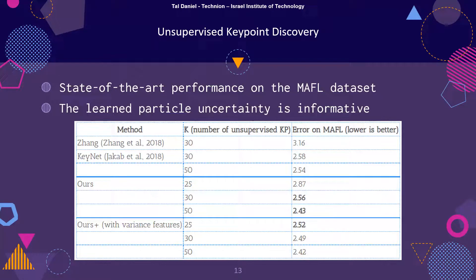DLP is a strong unsupervised keypoint detector that provides uncertainty estimates. The standard benchmark of unsupervised keypoint discovery is the linear regression error in predicting annotated keypoints from the discovered keypoints on faces from the CELEB-A and MAFL datasets. DLP's performance is state-of-the-art, and the full table can be found in the paper. Interestingly, the learned uncertainty of the particles can further push the performance up and can be used for model selection and particle filtering, as we demonstrate in the paper.